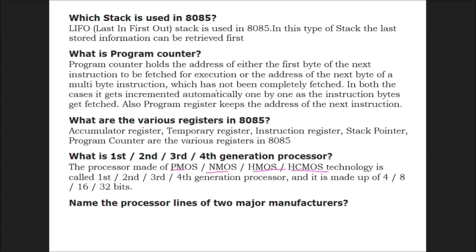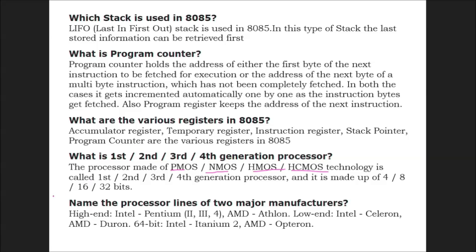Name the processor line of two major manufacturers. High-end: Intel Pentium 2, 3, 4, AMD Athlon. Low-end: Intel Celeron, AMD Duron. 64 bits: for Intel that is Itanium, for AMD it is Opteron.